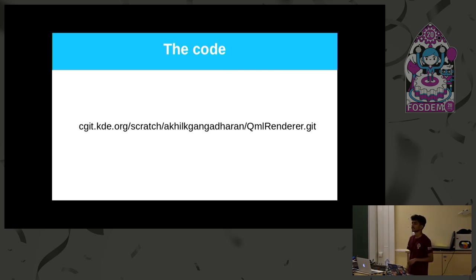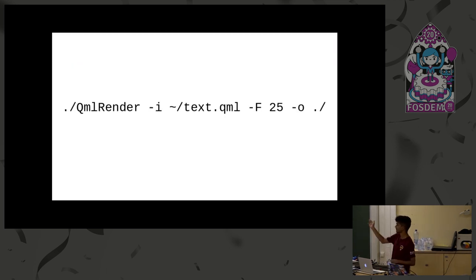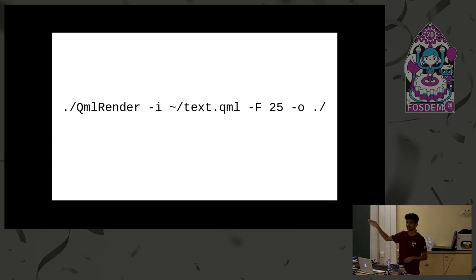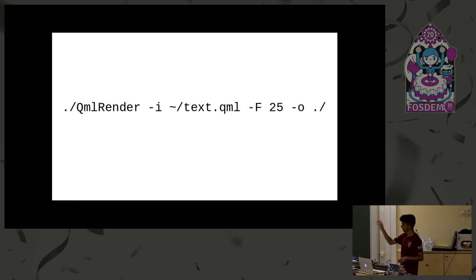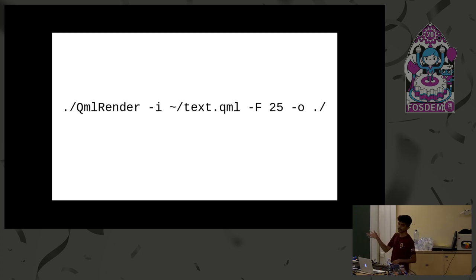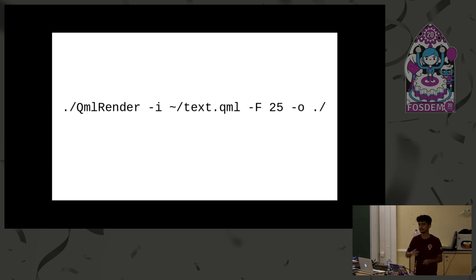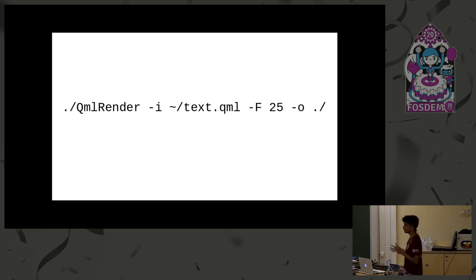With the QML Renderer library, you just provide the input QML file, tell how many frames you want, and give the output directory — and you get that many frames. By default it outputs JPG, but you can specify the format you want. Now we have the frames, and most of the heavy lifting is done. We have taken a QML file, rendered it, got the frames — now we just need to combine them together and play them.